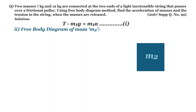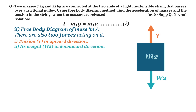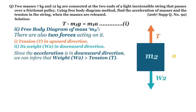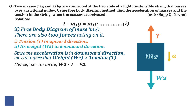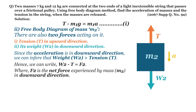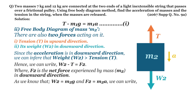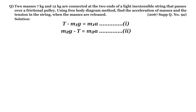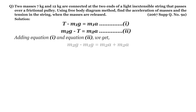Similarly, let's draw the free body diagram of mass m2. There are also two forces acting on it: tension T in the upward direction and its weight w2 in the downward direction. Since the acceleration is downward, w2 must be greater than T. Hence we write: w2 − T = F2, where F2 is the net force on m2 downward. Since w2 = m2·g and F2 = m2·a, we get: m2g − T = m2a. Let this be Equation 2. Now, to find the acceleration, we add Equation 1 and Equation 2, giving: m2g − m1g = m2a + m1a.